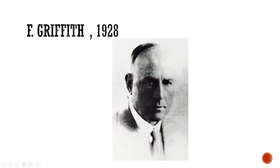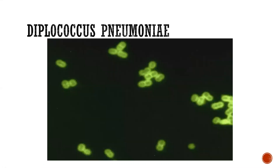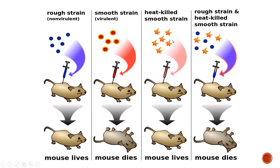The year was 1928. The scientist's name is Frederick Griffith. He was working with Diplococcus pneumoniae. There are two types of Diplococcus pneumoniae: one was smooth strain and one was rough strain. Let's look at this diagram with the help of Diplococcus pneumoniae.